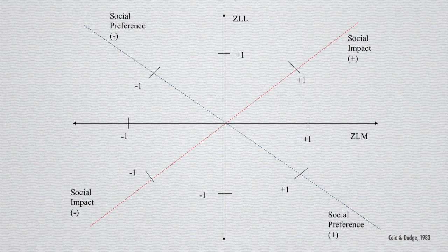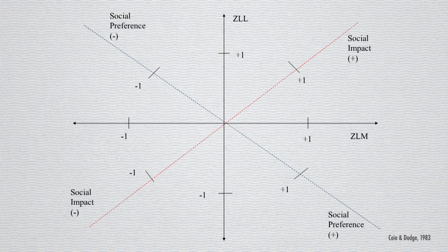What we do then is we look at how much you have a high social preference score, which could be plotted as a diagonal, and a high social impact score, which can also be plotted on the opposite diagonal. And once we do this we're able to identify five different groups of kids.